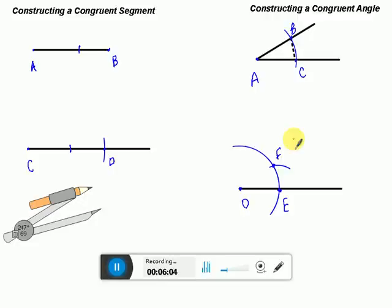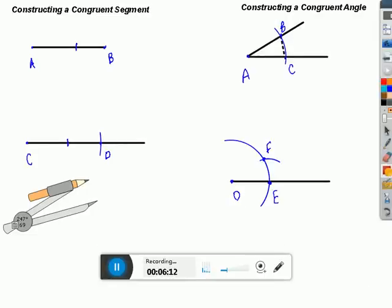Now, what I've done is I've created that same length from B to C, F to E. So, now I just simply take my straight edge and connect point D through point F. And I have just made a congruent angle.